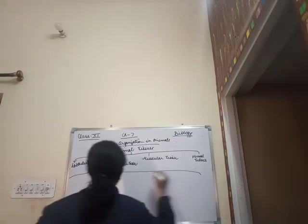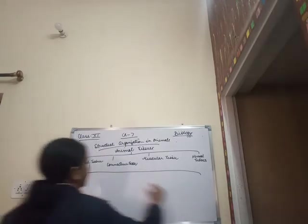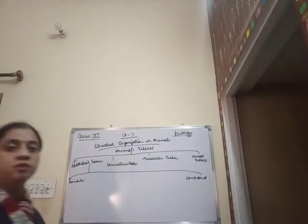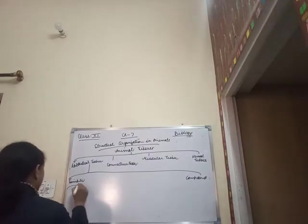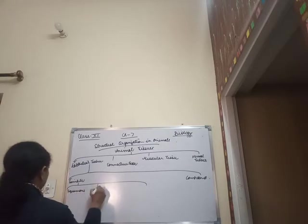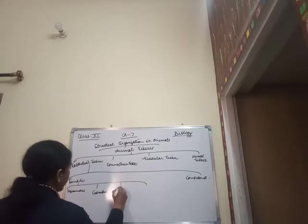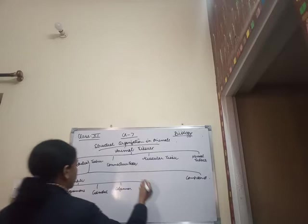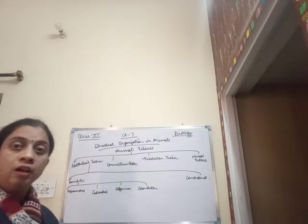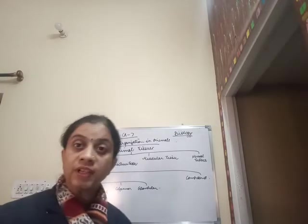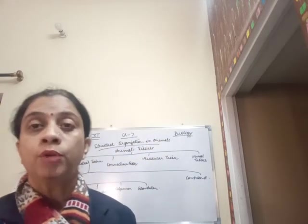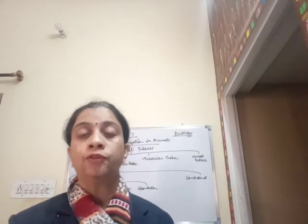Epithelial tissues can be categorized into two basic types: simple epithelial tissues and compound epithelial tissues. Simple epithelial tissues comprise a single layer of the same kind of cells. They can be of types: squamous, cuboidal, columnar, and glandular epithelium. The cells of the squamous epithelium are irregular in shape, size, and form. They are present in the alveoli, in the lining of blood vessels (endothelium), and in the peritoneum of the body cavity, playing an important role in diffusion.